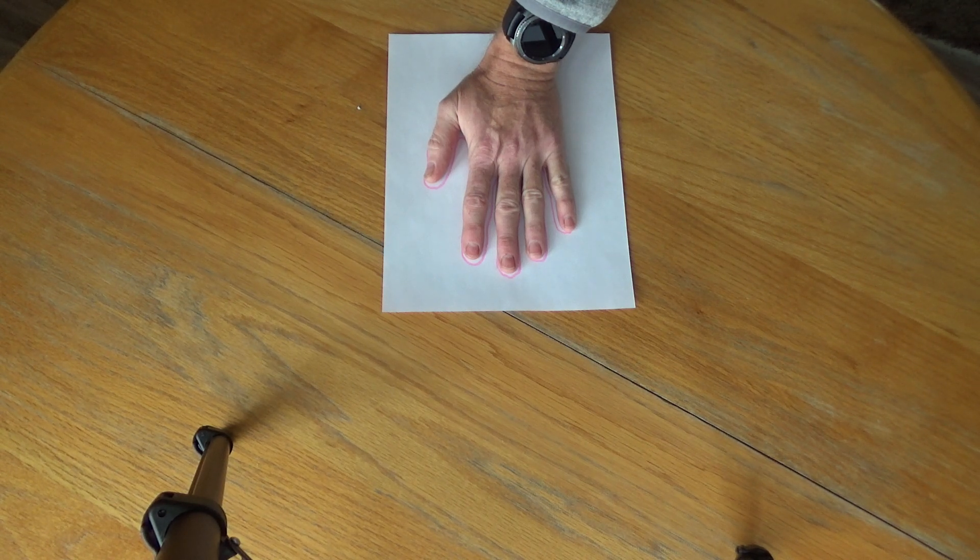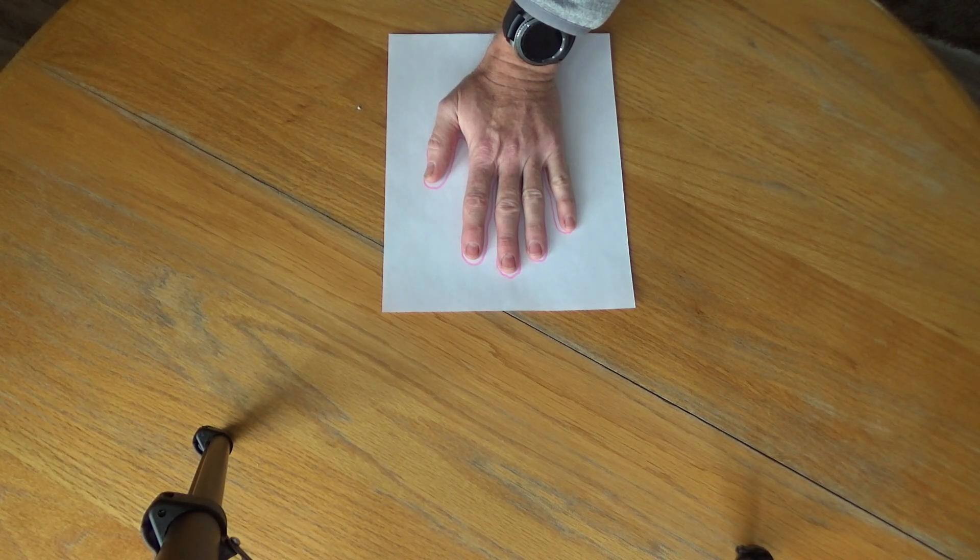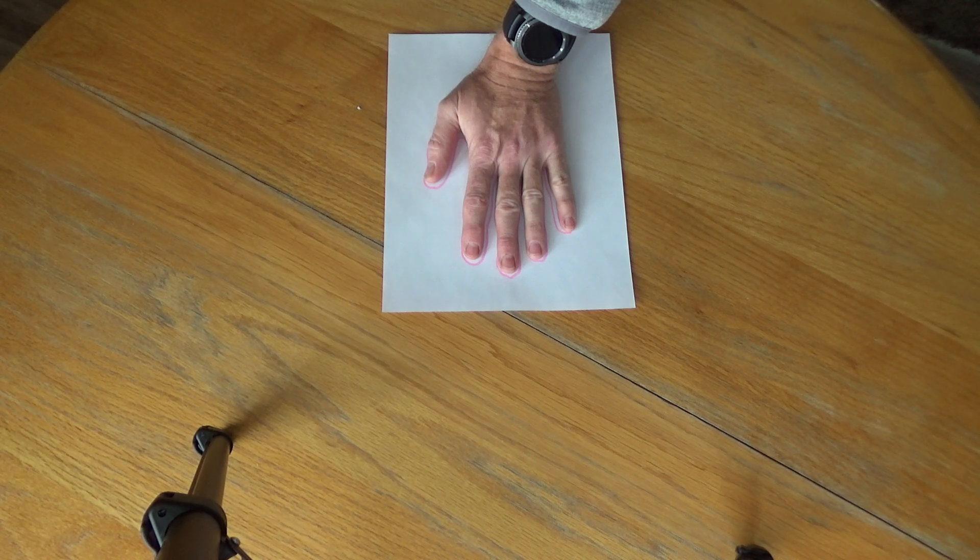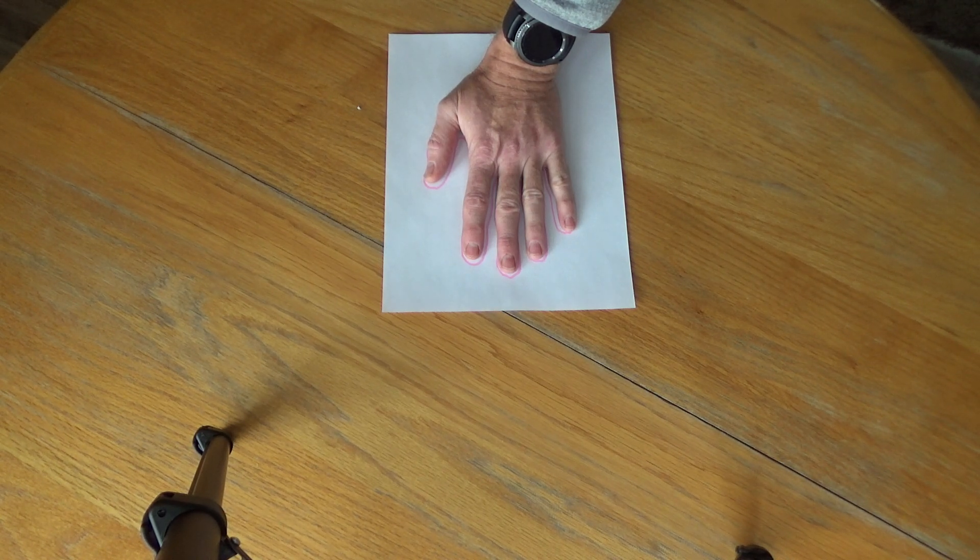That's what you're going to do first. You're going to get a piece of paper, place your hand flat on the piece of paper, and then draw an outline around your hand like so.